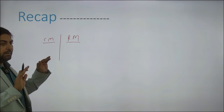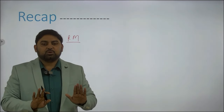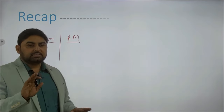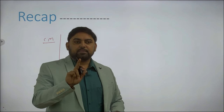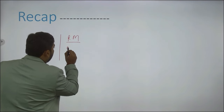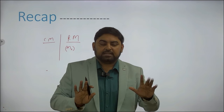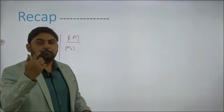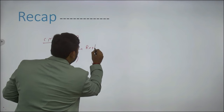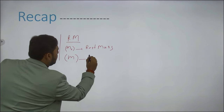In classical mechanics, mass has only one meaning — it is constant at every time. Whether the body is at rest or moving, mass is constant. But in relativistic mechanics, mass has two meanings. When the body is at rest, that mass is called rest mass, written as M₀. When the body is moving with a certain velocity, that mass is called relativistic mass, written as M.